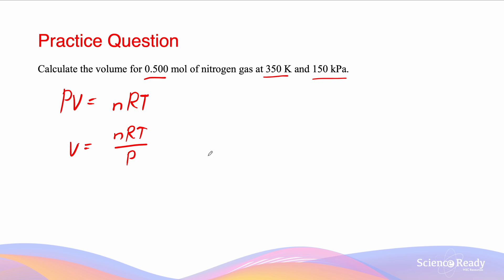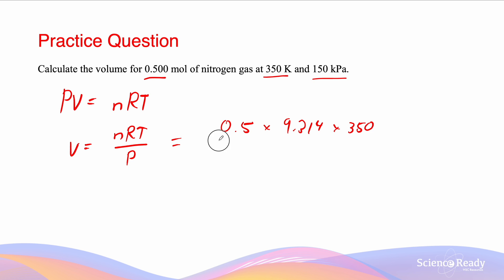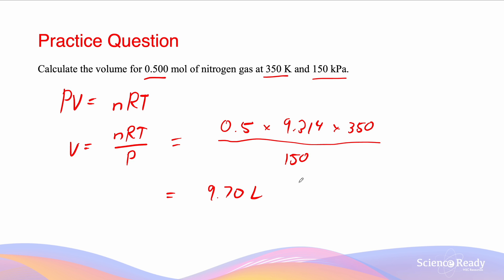We want to calculate V, given by rearranging to V = NRT/P. Substituting: N is 0.5, R is 8.314, T is 350 Kelvin, and P is 150 kPa. This gives a value for volume of 9.70 liters, again to three significant figures.